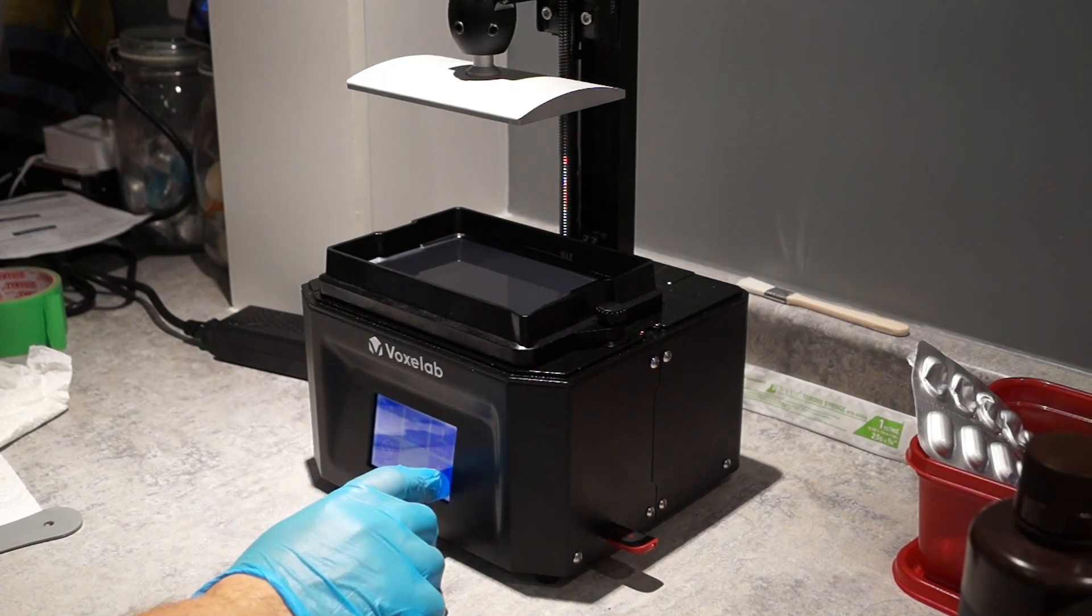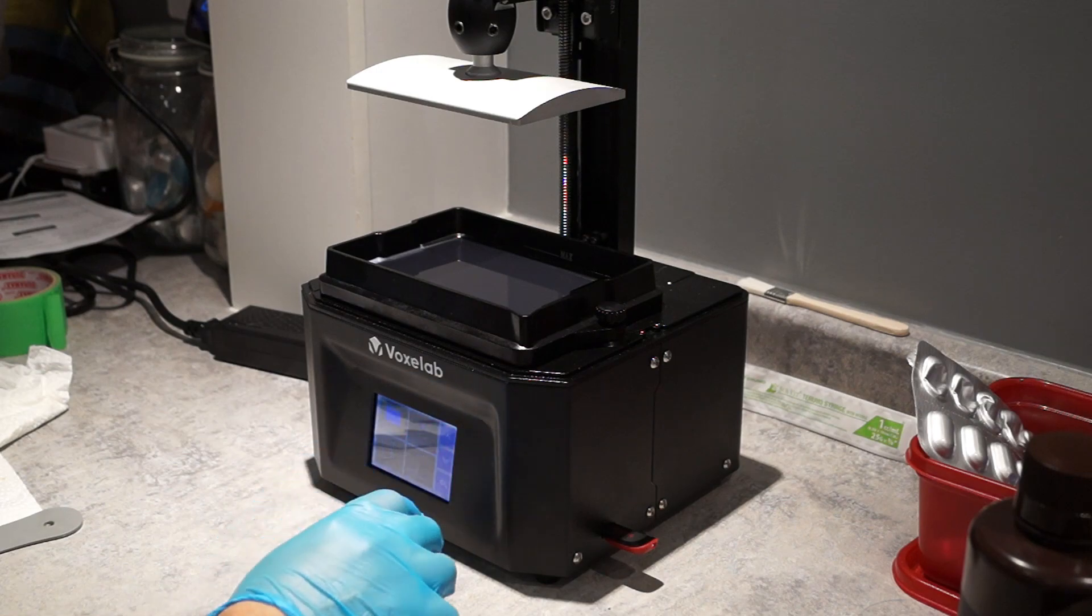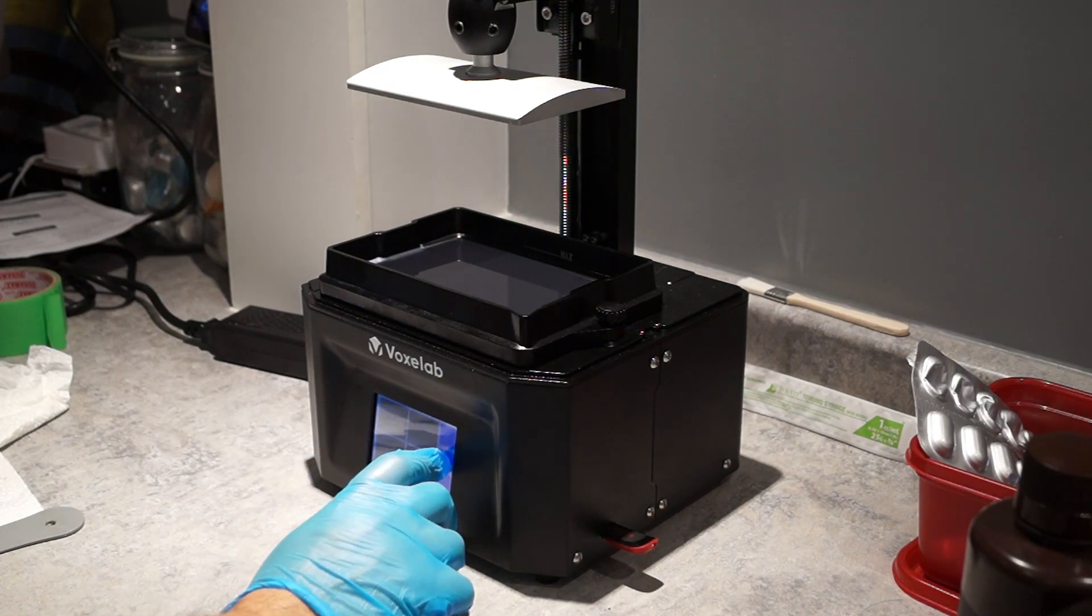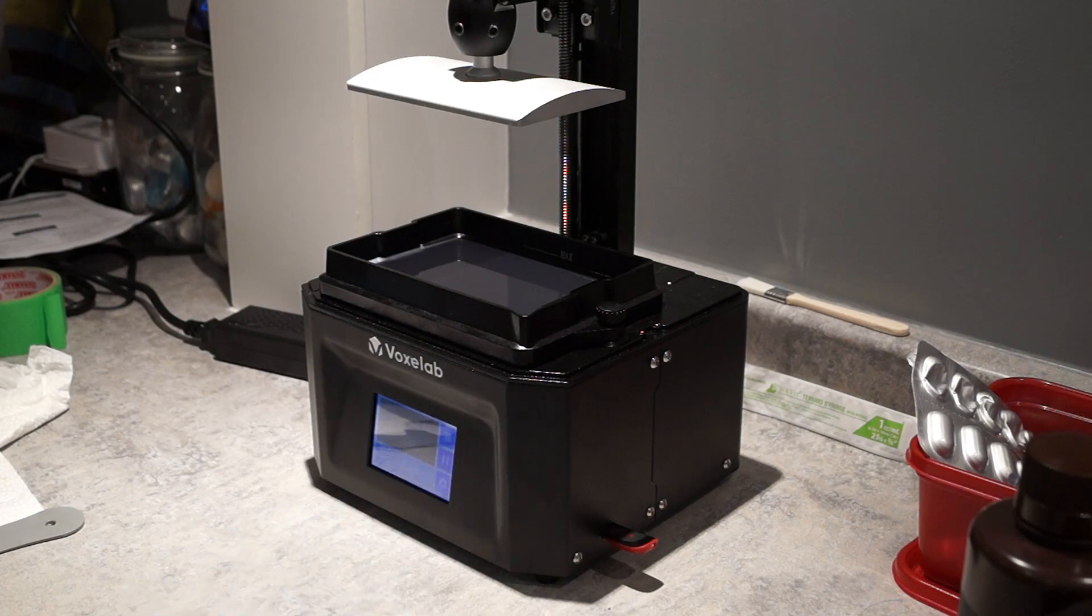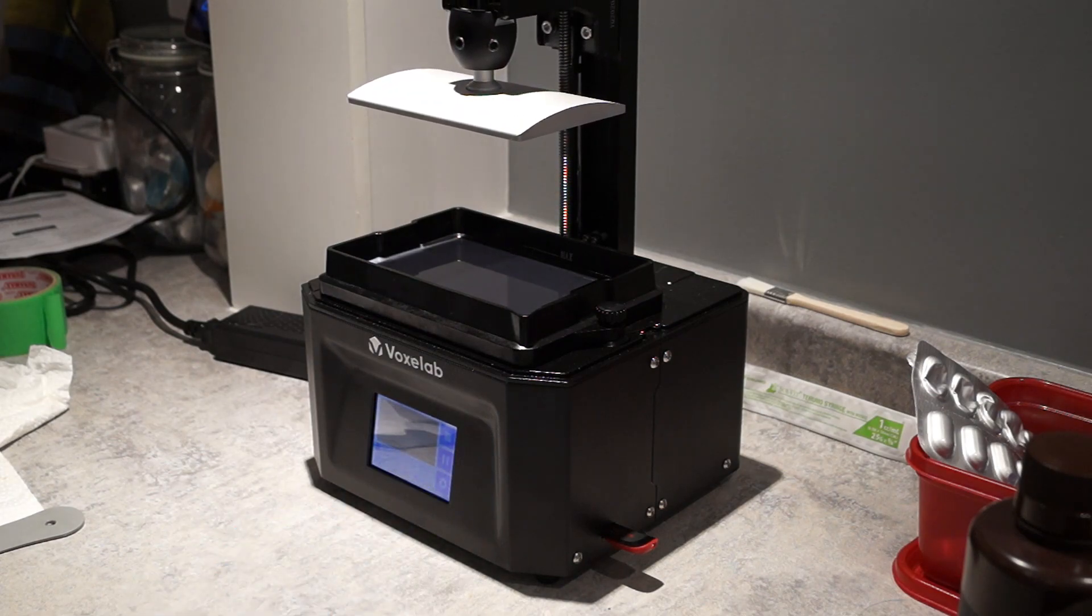Next part I'm doing now is just setting up the print. I'm going through the menus and choosing it from the on-screen selection, and it shows you a little picture of each of the models that are on the USB stick which you can see is seated on the right side of the printer. And here we go.